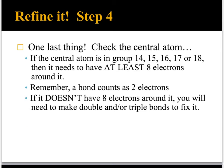One last thing. You need to check out the central atom. If the central atom is in group 14, 15, 16, 17, or 18, it does need to have at least eight valence electrons around it. Remember that a bond does count as two electrons. So if that central atom doesn't have eight electrons around it, you're going to need to make double and or triple bonds to help it have those eight electrons.